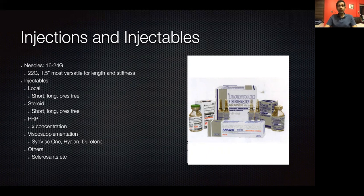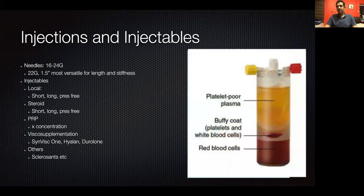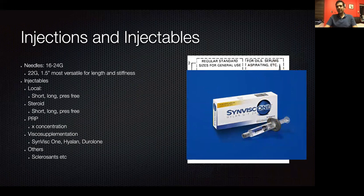You should know whether local anesthetics contain methylparaben, which is the neurotoxic agent when doing perineural injections. Know the different steroids available — besides Kenocort, there's also Oracort which is preservative-free, and a bunch of other agents. PRP has value in certain situations, so be aware of which types of PRP are available and which you'll use. Last but not least, we have viscous supplementation for intra-articular injections, and sclerosants for some other situations.